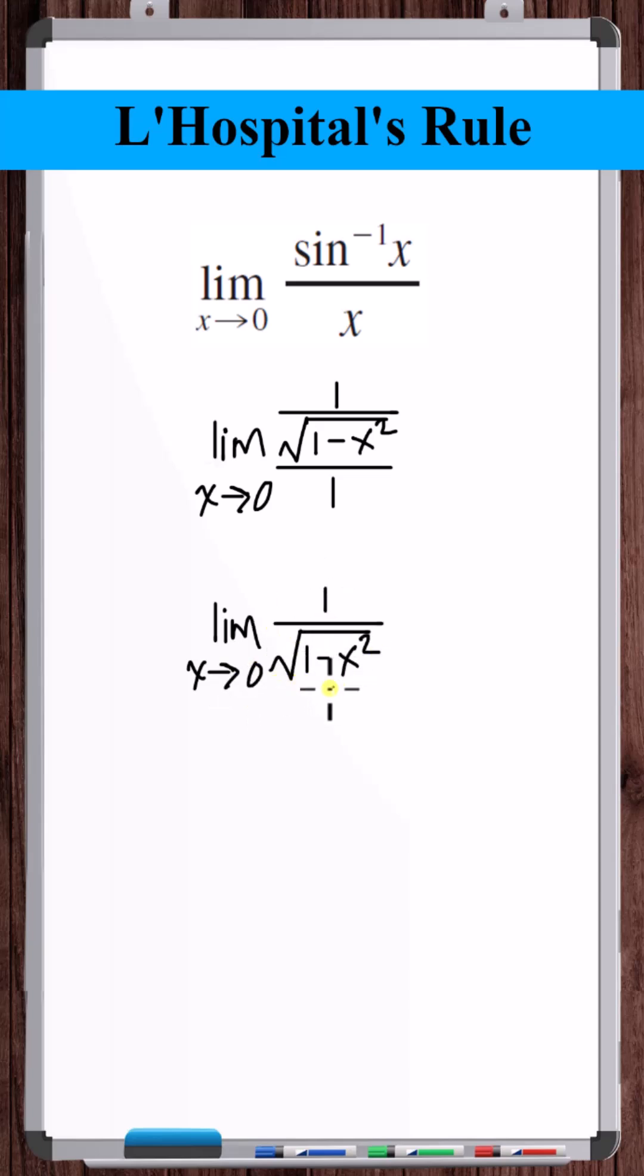Plug in 0. 0 squared is 0. 1 minus 0 is 1. Square root of 1 is 1. The denominator goes to 1. So this limit is equal to 1.